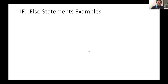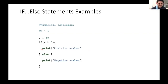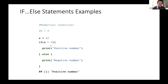Looking at a numerical condition example: x equals 42. If x is greater than 0, print 'positive number'; else, print 'negative number.' Since x is still 42, it prints 'positive number.' But if I changed it to negative 3 or any negative number, it would skip the if block, go to the else statement, and execute the code there, printing 'negative number.'